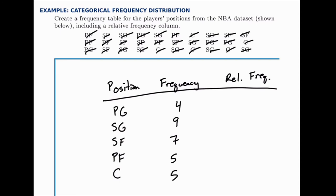Notice that if we add up those frequencies, we should get the total number that we have, which is 30. So we should get 30 if we add those up, and you can check that by adding those frequencies. For the relative frequency, we need to divide each frequency by the total number in our sample, which is again 30.